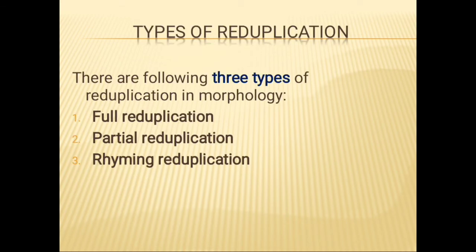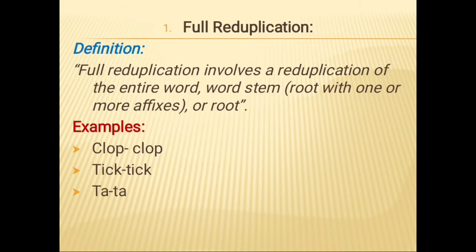There are three types of reduplication. The first is full reduplication, the second is partial reduplication, and the third is rhyming reduplication. Full reduplication involves the repetition of the entire word, stem, or root. For example: 'clop clop,' 'tick tick,' 'ta ta' — no word or letter is changed; everything is written the same. Other examples include 'bye bye,' 'blink blink,' 'knock knock,' 'so so,' and 'pp.' In full reduplication, the exact word is repeated with no changes.